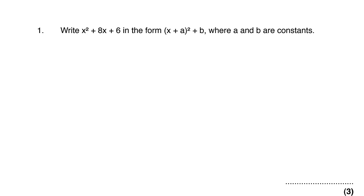Here is our first question. We are given x squared plus 8x plus 6, and we are asked to write it in the form x plus a, all squared, plus b. This is the vertex form of a quadratic expression, and it can be formed by the completing the square method.